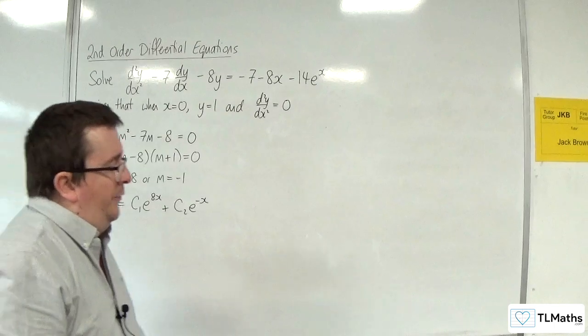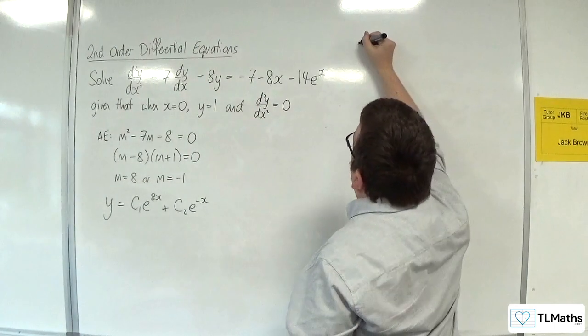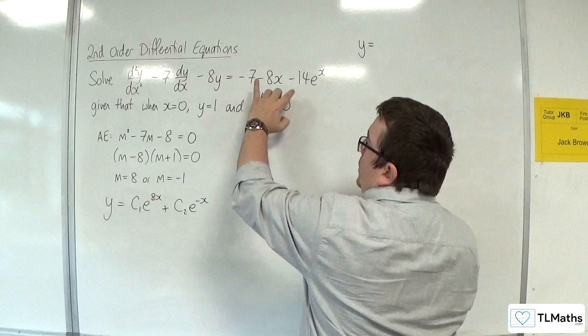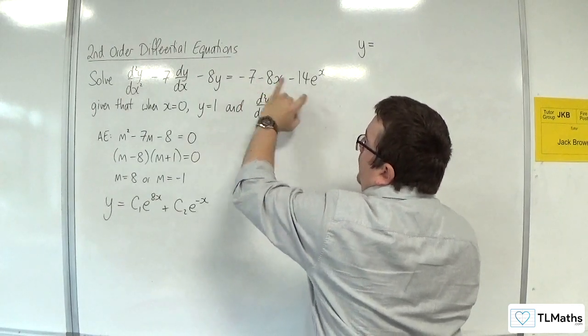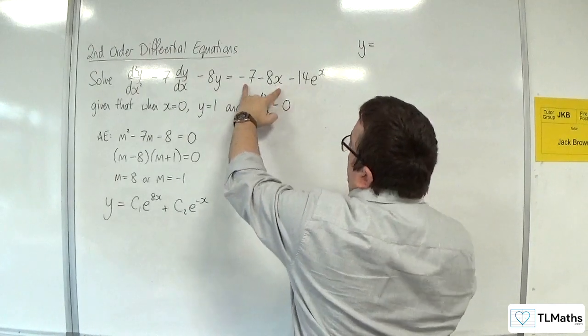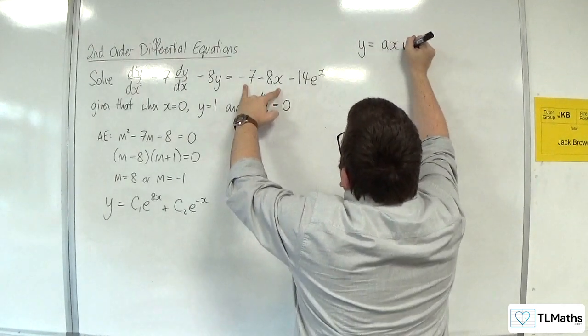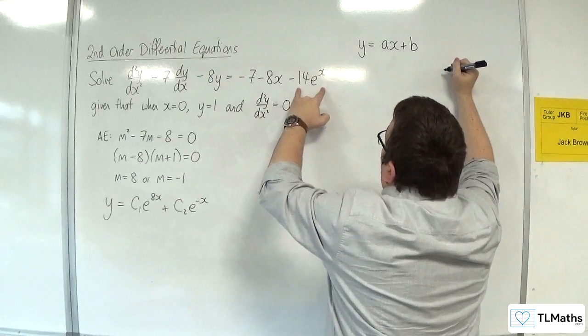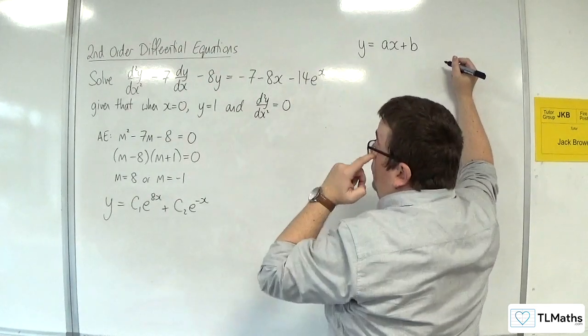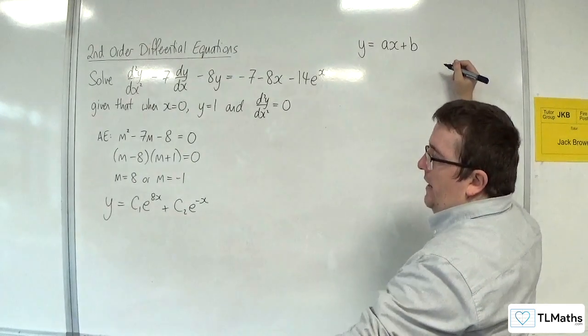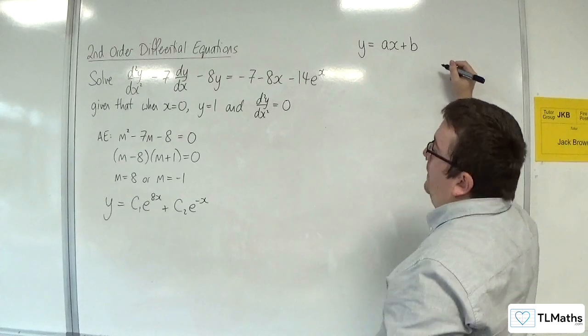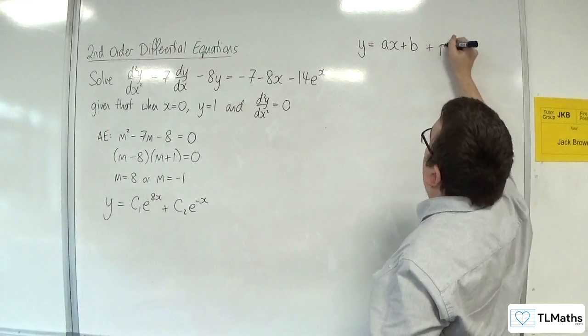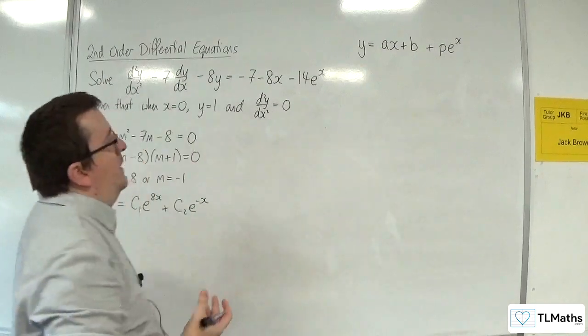So next we're going to need to look at that right-hand side and find a trial function. On the right-hand side, we've got the sum of a linear term and an exponential term. So for the linear part, I'm going to need ax + b. And for this part, I'm going to need something times e^x. Since I'm using c down here, and I don't really want to use d or e for that matter, let's just pick another letter. Let's just go with p. So I'm going to go with y = ax + b + pe^x.